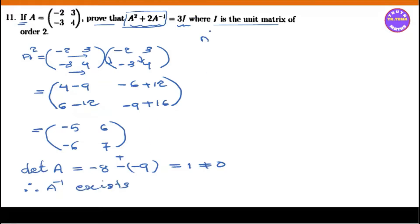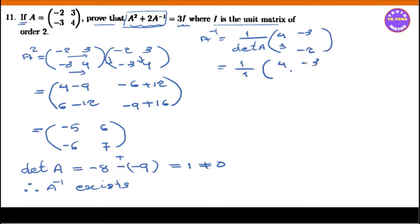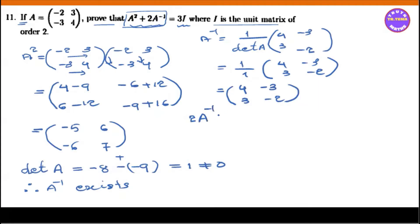A inverse is equal to the formula. 1 over det(A) times the adjugate: 4, minus 2, minus 3, 3. So A inverse equals the matrix with entries 4, minus 3, 3, minus 2, which gives us the inverse.